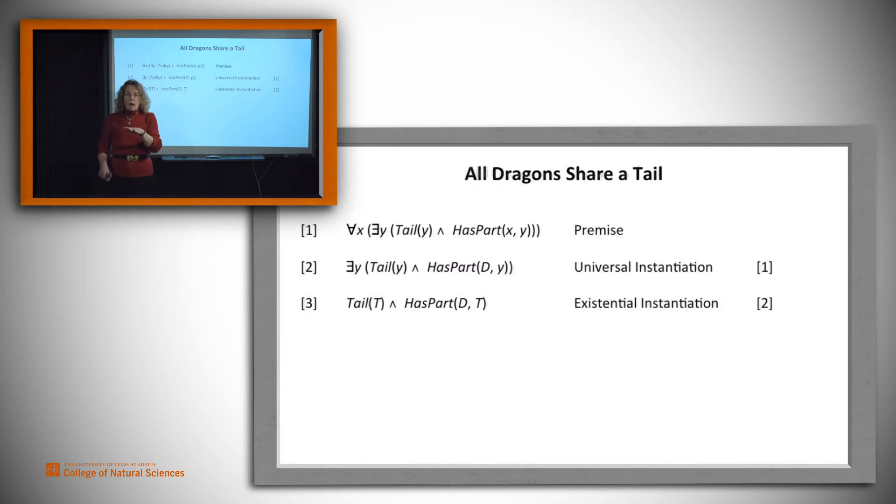Now, T and D are arbitrary values. We've made no additional assumptions about them. So we can use universal instantiation to say, well, then these claims have to be true for any such values. And so for all X, X, remember X is the dragon, has this T as a part.